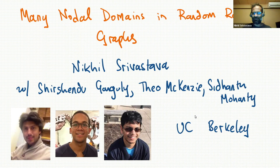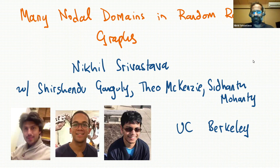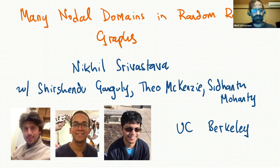Thanks a lot, Ronan, and thanks for inviting me to Wolfenstein Hall — too bad I can't be there in person. This is joint work with Shersenlu Ganguly, Theo Mackenzie, and Siddhant Mohanty, who are all from UC Berkeley, and it's about nodal domains and random regular graphs. Feel free to stop me at any moment if you have any questions.